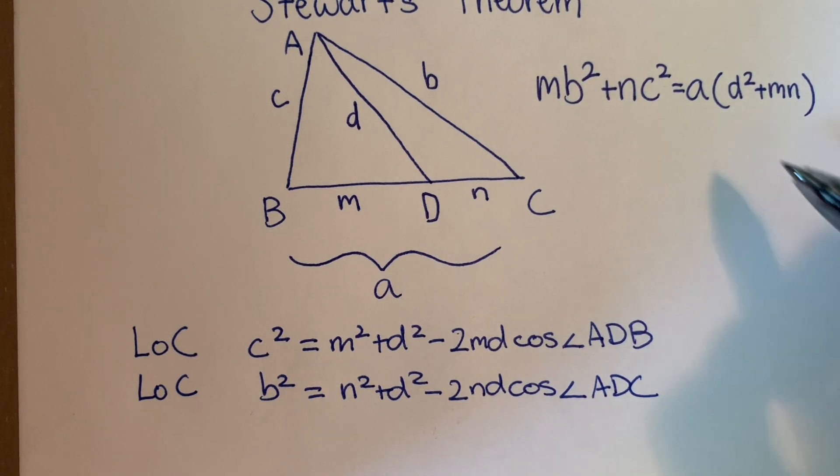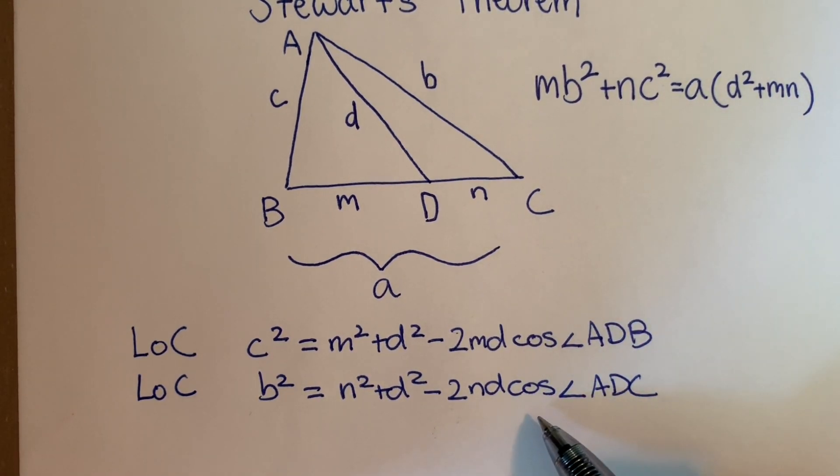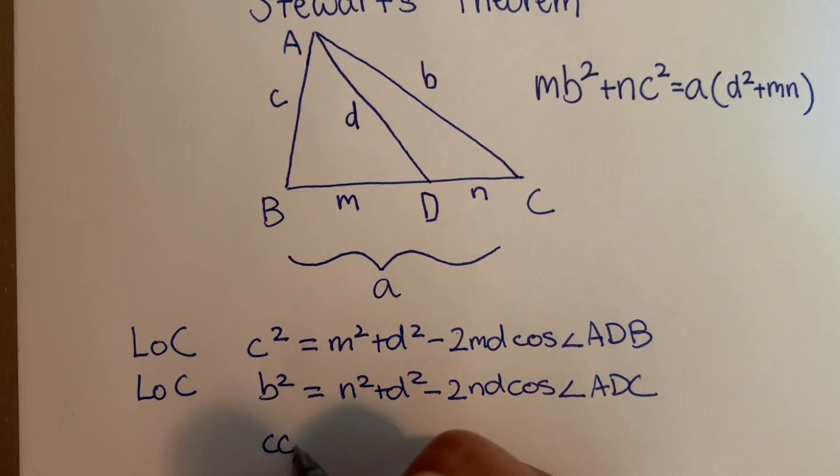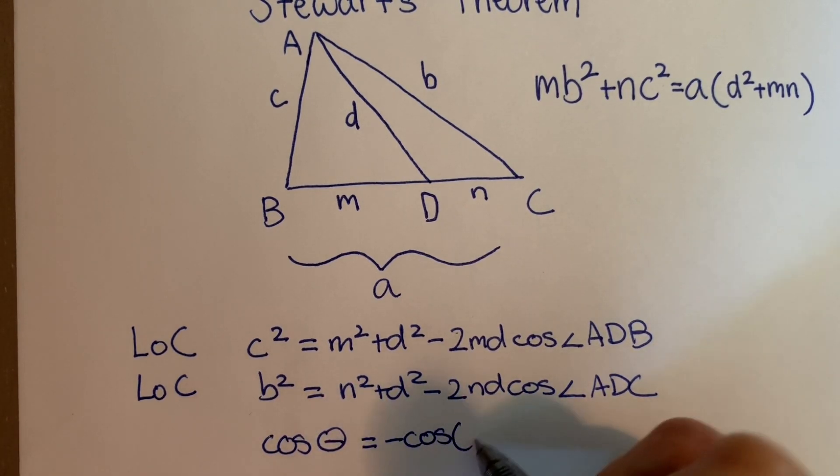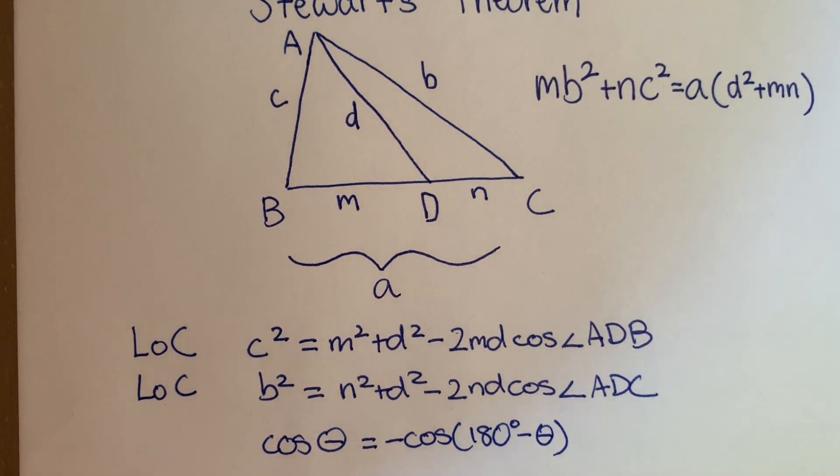Now in our Stewart's Theorem formula, we don't see any cosines. So somehow we want to get rid of these two terms. Now we know a cosine identity that relates supplementary angles. That is cosine theta equals negative cosine 180 degrees minus theta. In other words, if we have two supplementary angles, their cosines are going to be the opposites of each other.